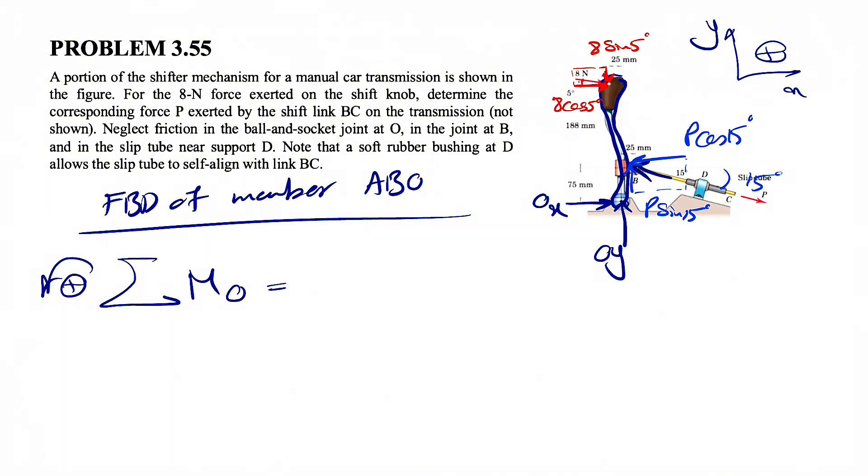So the X component is going to be clockwise moment, so negative minus 8 cosine of 5 degrees. And the distance would be the vertical distance to the line of action, which is basically 188 plus 75 millimeter. I'm not going to do the unit conversion because it will be canceled out at the end.